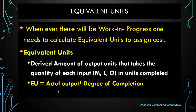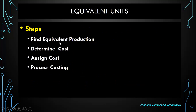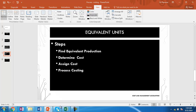Whenever there is work in progress, we calculate the process cost by first finding the equivalent production, then we determine and allocate the cost, then we assign the cost to finished goods and work in progress, and then we prepare the process costing account. These steps are not mandatory but facilitate the process of determining cost at the end of a particular process.